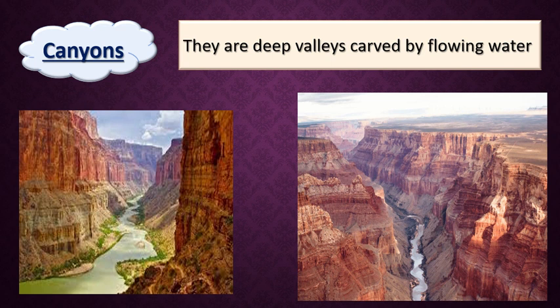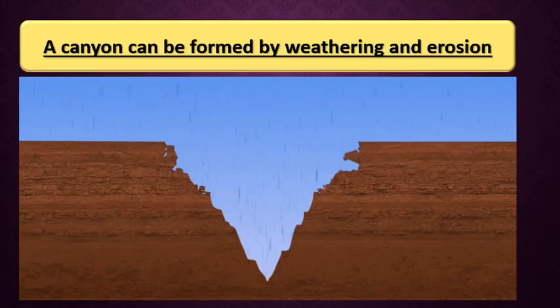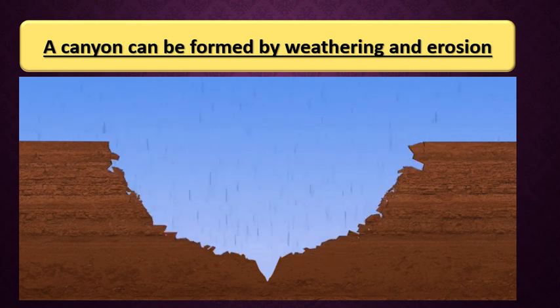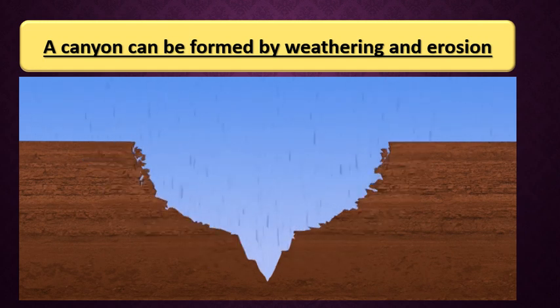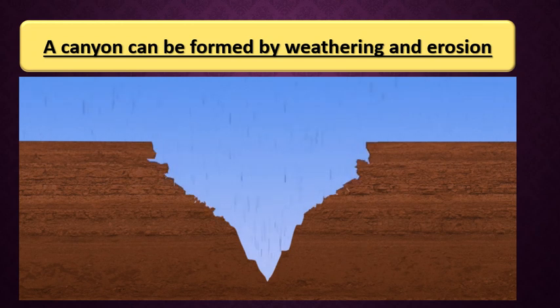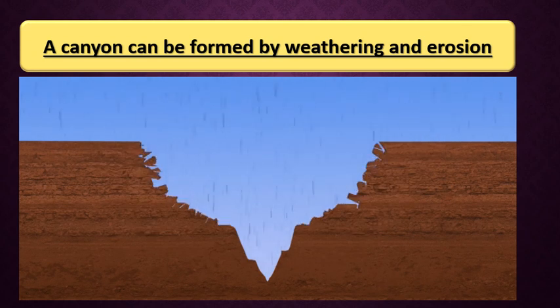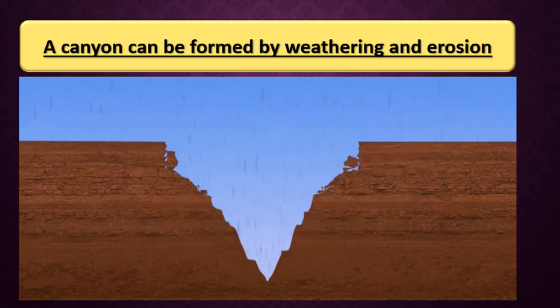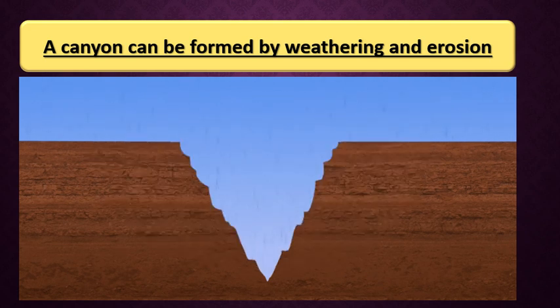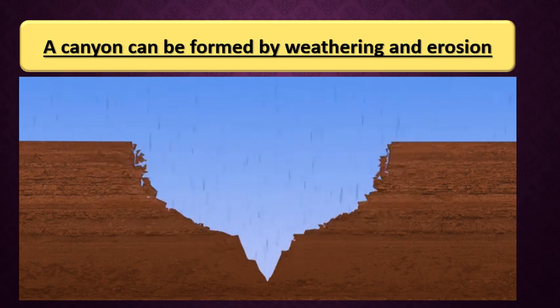This canyon was carved by flowing water. Flowing water on a land will make a process that forms a canyon. How did the water carve or form a canyon? Canyon can be formed by weathering and erosion. Weathering means the breaking down of rocks. When water runs over a rock, it will make breaking down of rock.